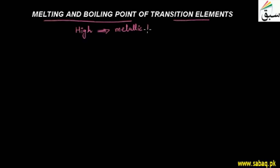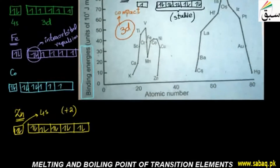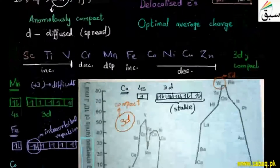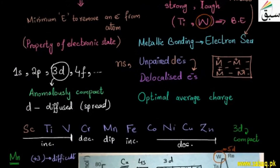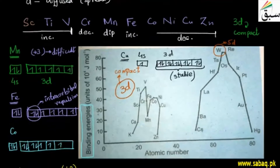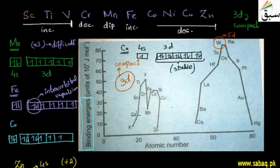Metallic bonding, which we have studied previously, involves metallic binding energy. We have talked about binding energy and strong metallic binding. For the first transition series, melting and boiling points are related to the metallic binding.